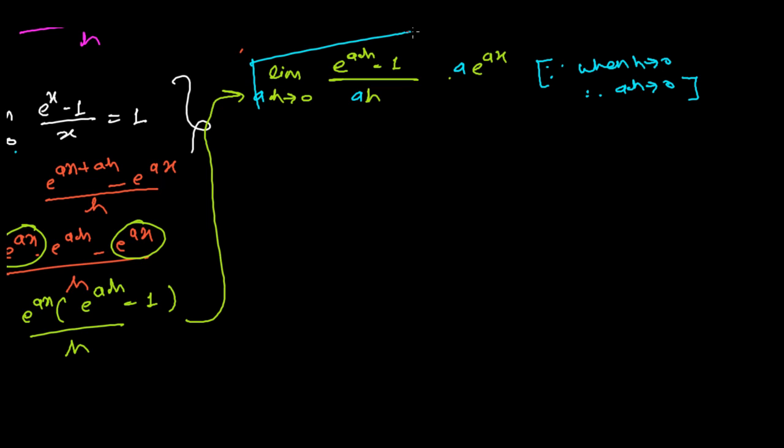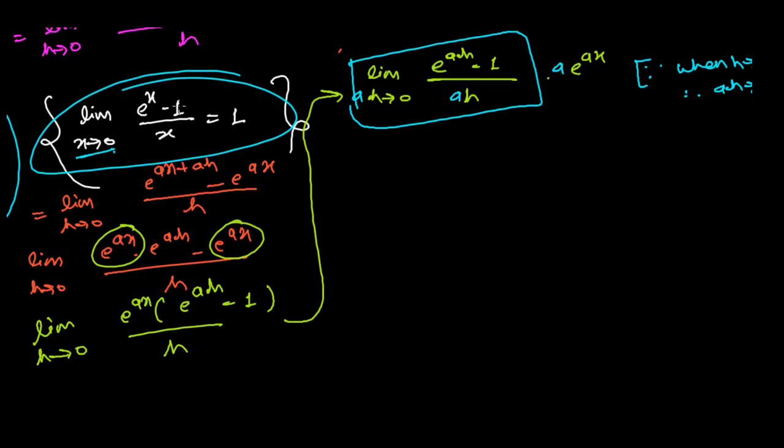So now this is a perfect formula match. As I told you, lim(x→0) [e^x - 1]/x = 1. So lim(ah→0) [e^(ah) - 1]/(ah) = 1, times a·e^(ax). Therefore, our derivative f'(x), or in better notation, d/dx[e^(ax)] = a·e^(ax). That's our answer.